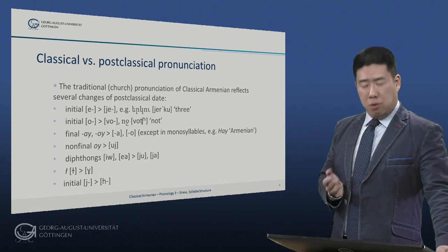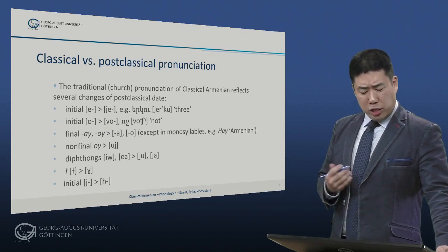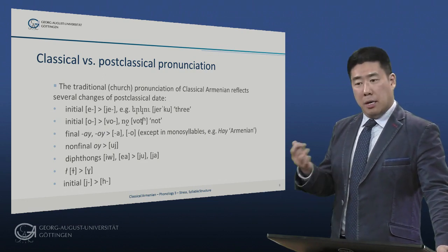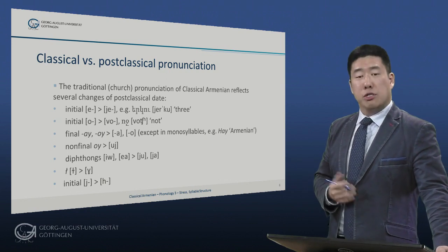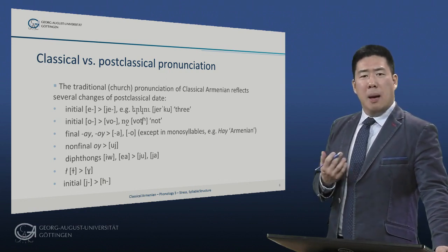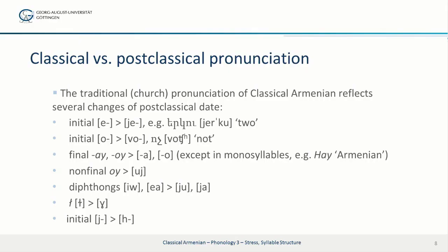Let's turn now to differences between classical and post-classical pronunciation. The traditional church pronunciation of classical Armenian, as maintained in the Armenian Apostolic Church to this day, reflects several changes which we believe were actually post-classical. For example, initial e is pronounced ye — for example, yerku ('two'). Similarly, initial o is pronounced as vo, as in vo-ch ('not'). Word-final i and oi are pronounced as simply ah and o respectively, except in monosyllables. Non-final oi is pronounced as ui; the diphthongs iu and ea are pronounced as yu and ya; and veolarized l became the voiced veolar fricative l.